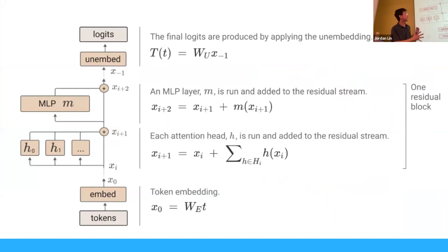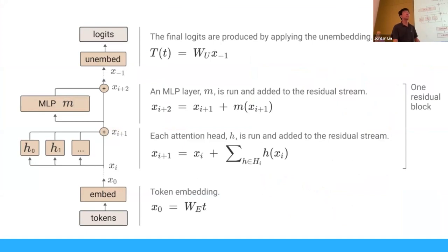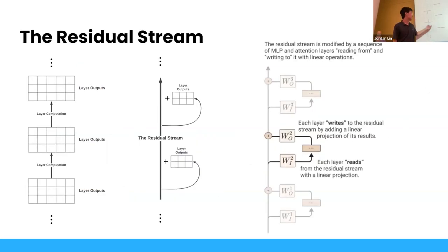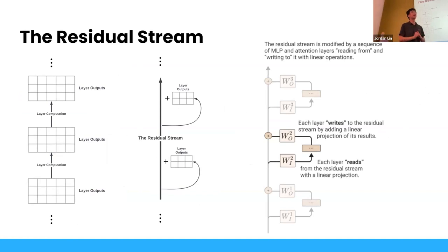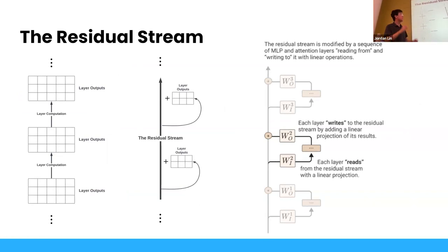After every attention layer, it writes to the residual stream. At the very end, we have the unembedding layer, which takes in a sequence of timestamps × dim and converts those to logits for the next token prediction. Each layer reads from the residual stream via a linear projection — that's effectively what the value projection does. It does some attention and then writes to the residual stream by adding a linear projection of its results. So we have this residual stream, and each layer reads from it and adds back to it.